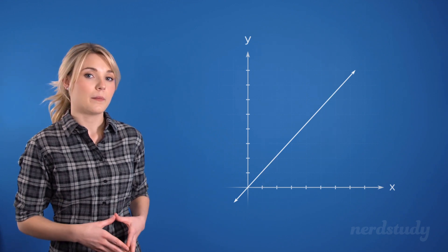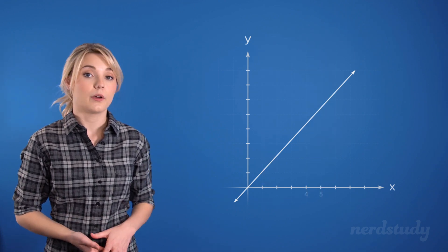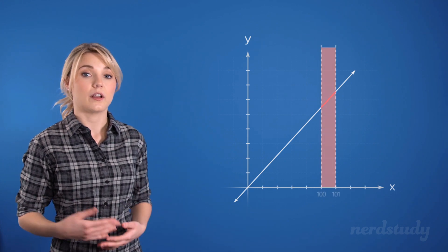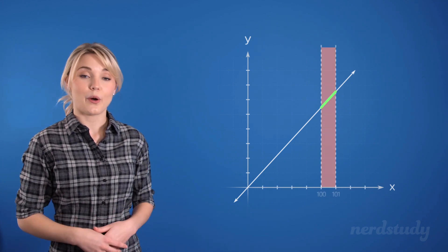So whether you're going from an x of 4 to 5, or you're going from an x of 100 to 101, the change will always be the same.